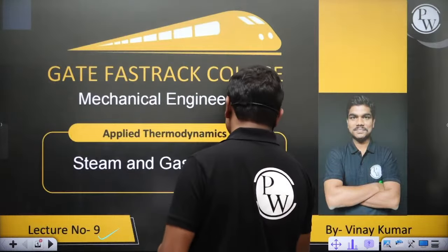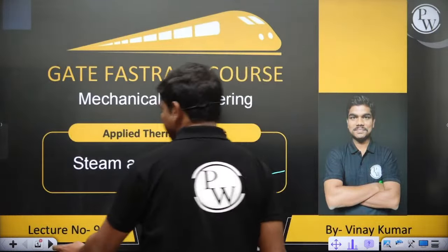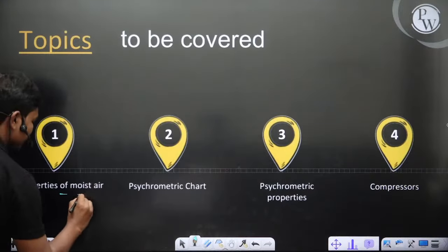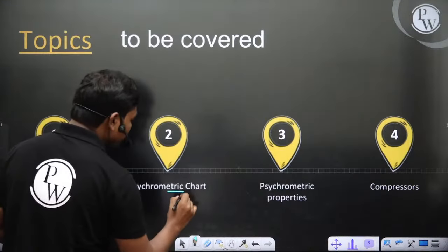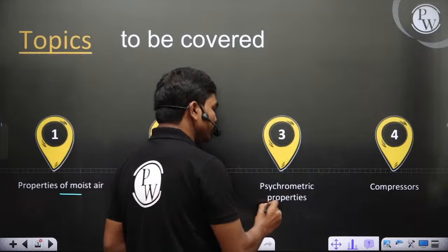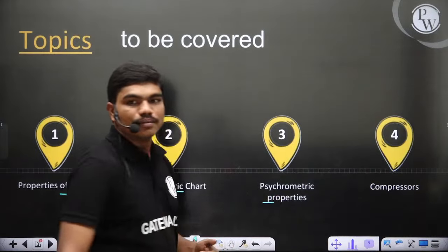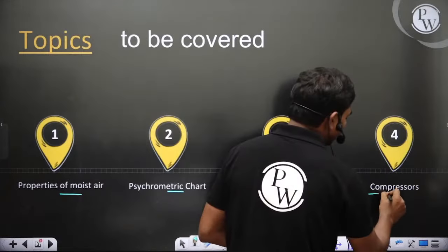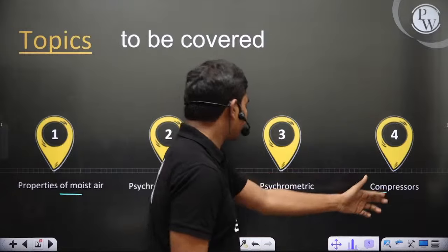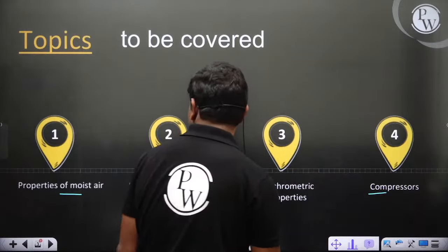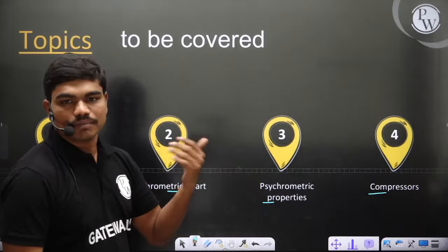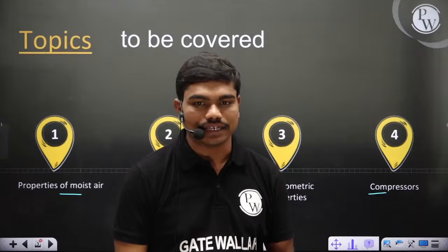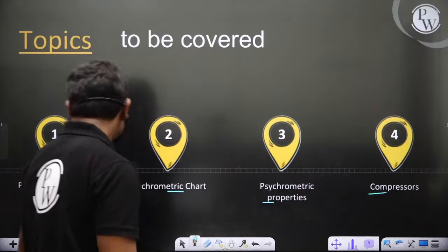In this lecture, it's titled steam and gas turbines, but majority we will be covering first psychrometry — properties of moist air, then the psychrometric chart, and also psychrometric properties. And if time permits, I'll also cover some bit of compressors. Maybe this complete air conditioning I'll try to cover in a detailed effective way.